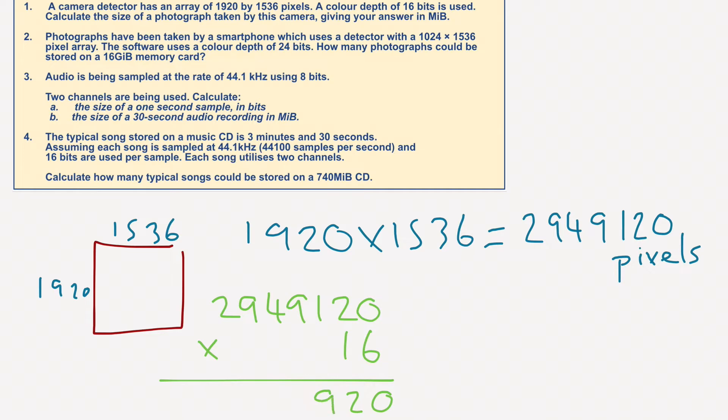47,185,920 is the area, the array, the number of pixels times by the color depth. So we've moved this into bits, and we want it in megabits. So how do we do this?